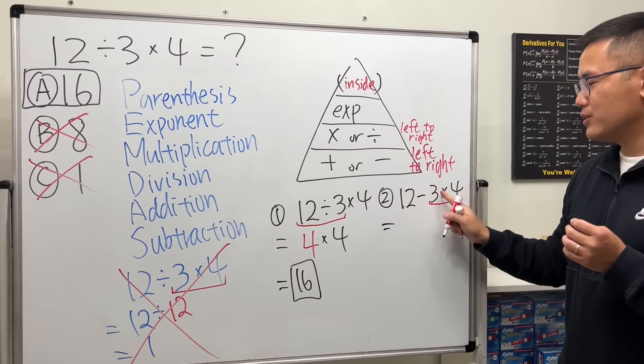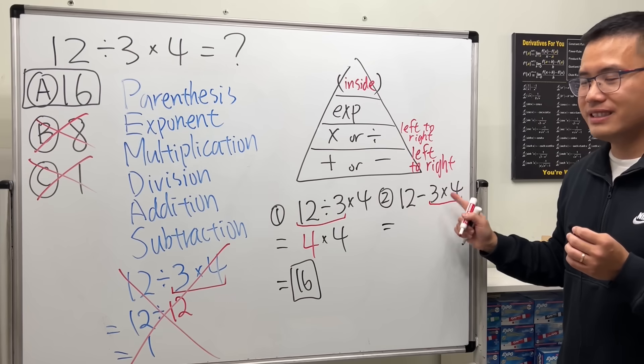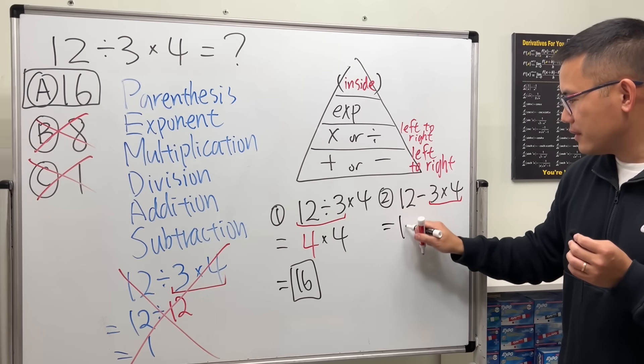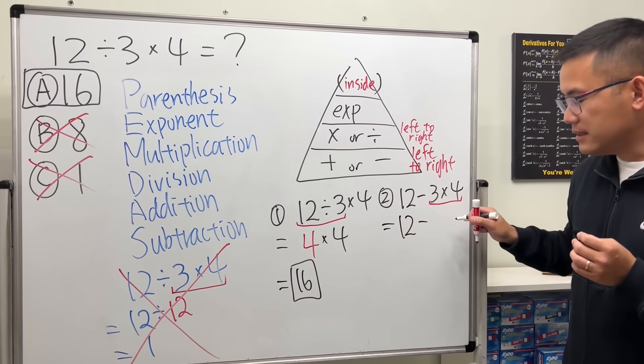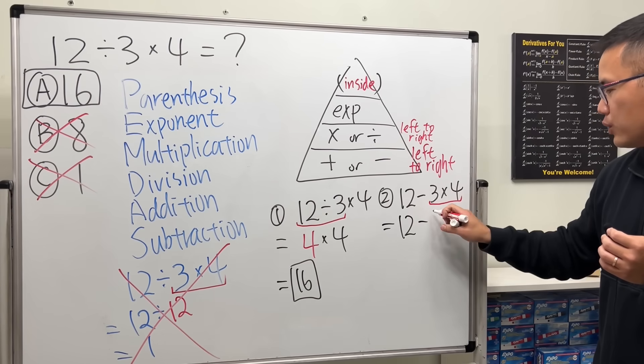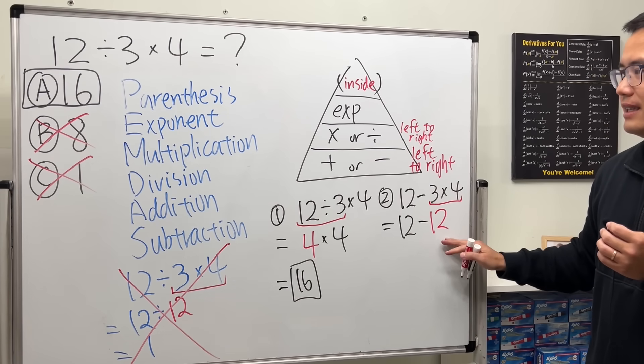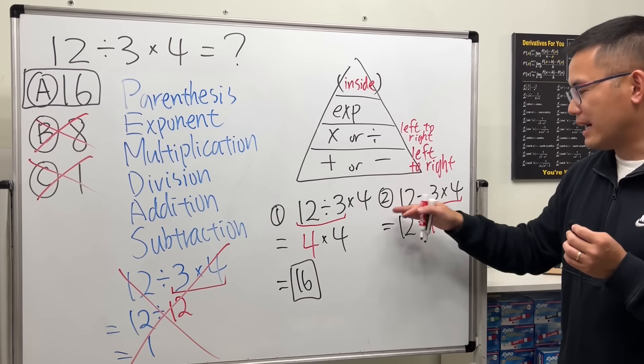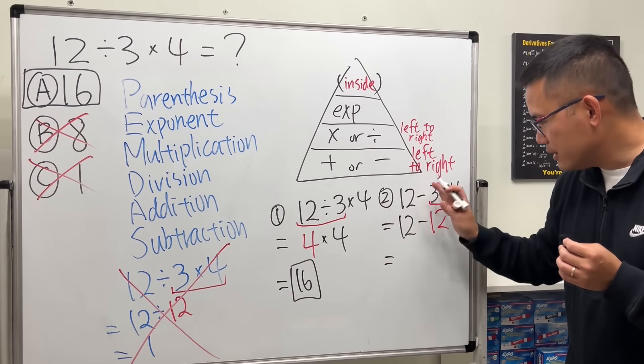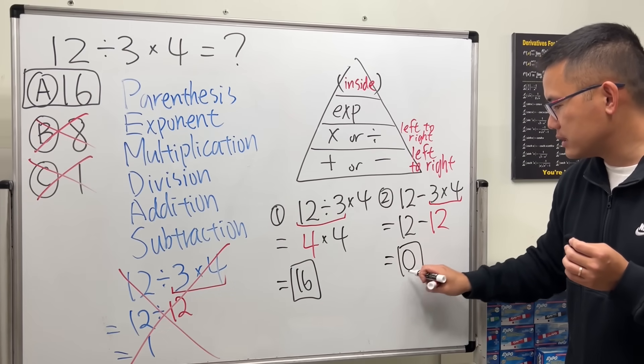In this case we multiply first, right? 3 times 4, we multiply that first. We will have 12, and then you bring down the minus. 3 times 4, we get 12, all right. And then we proceed by subtracting this and that, so this question we will end down with zero.